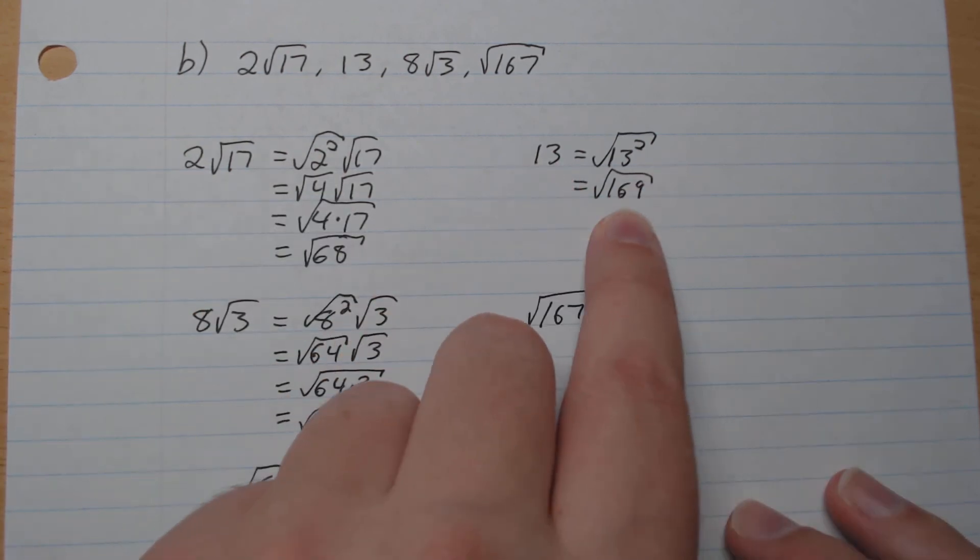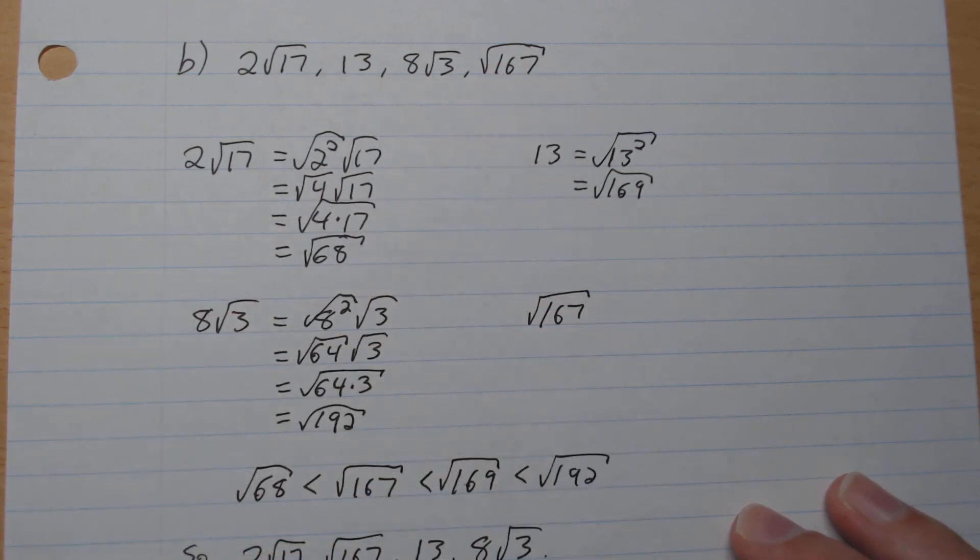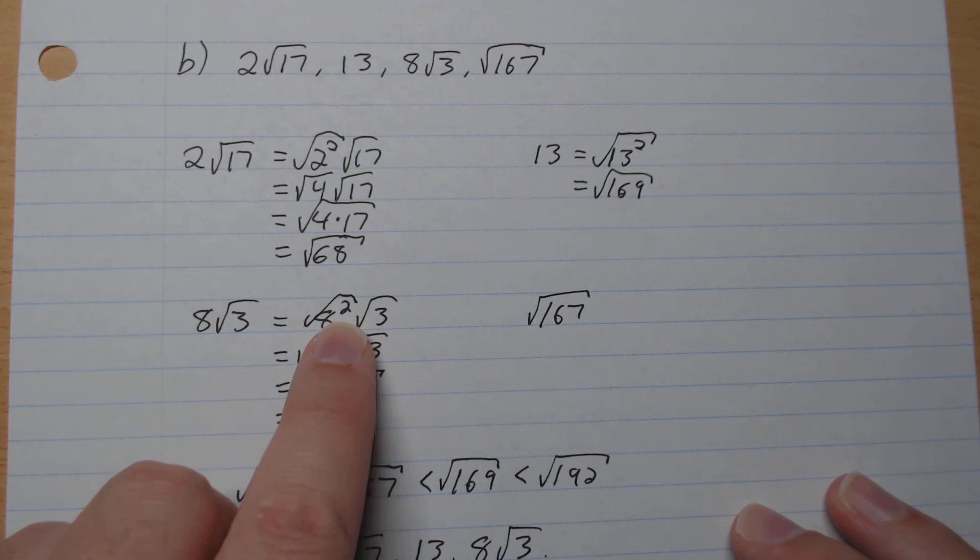13, square square root gives root 169, root 167 stays. 8 root 3, so square square root like that, we get root 192.